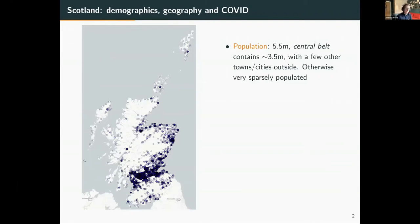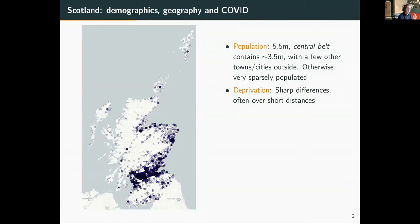Each of these points on the map represents around 500 to 1000 people. With regards to deprivation - it's the case for Scotland, for pretty much everywhere in the UK and probably the world - you have very sharp differences between the most deprived and least deprived areas, but they're often very close to one another. In Edinburgh, for example, you have a very affluent area which is often directly next door to a very deprived area.